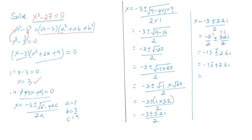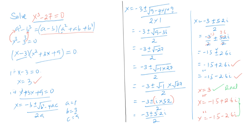So the two remaining values of x are: x equals minus 1.5 plus 2.6i, and x equals minus 1.5 minus 2.6i. These give us the other two roots of this equation. The complete solution to x cubed minus 27 equals 0 is: x equals 3, or x equals minus 1.5 plus 2.6i, or x equals minus 1.5 minus 2.6i. One solution is a real number while the other two are imaginary (complex) numbers.